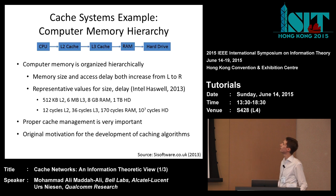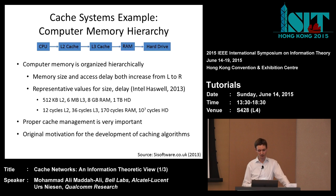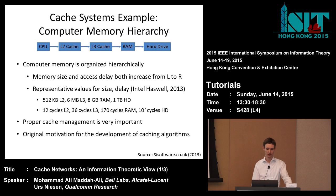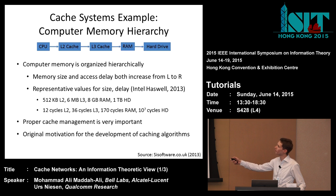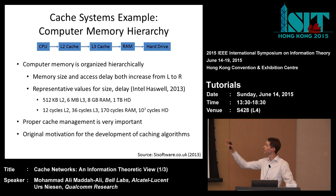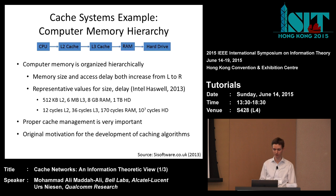The last example is the computer memory hierarchy, which was the original motivation for many developments in this literature. A computer memory is organized hierarchically: CPU, then a level-2 cache close to the CPU, a level-3 cache, RAM, and finally a hard drive. Memory sizes increase from left to right, and access delay also increases from left to right.